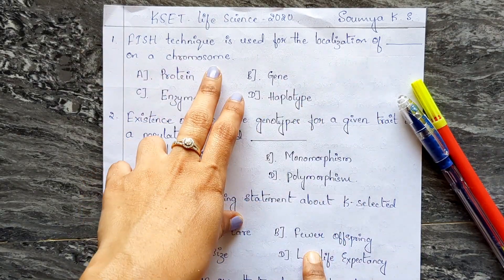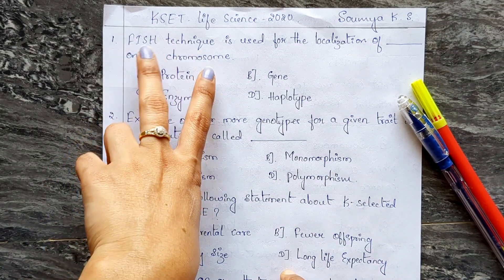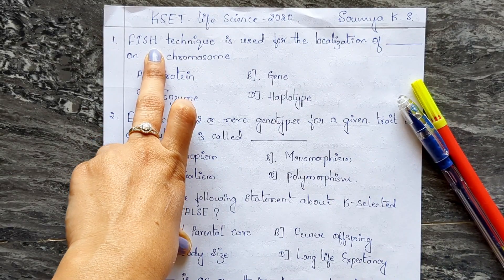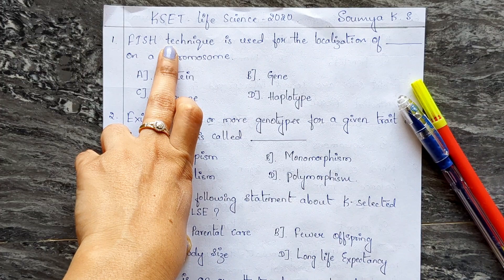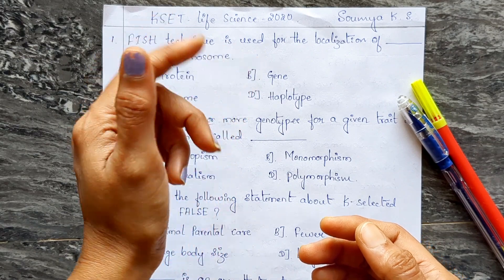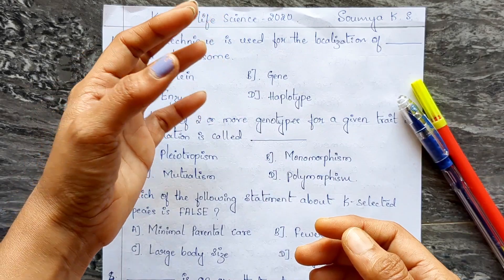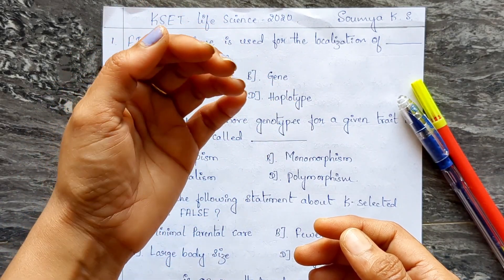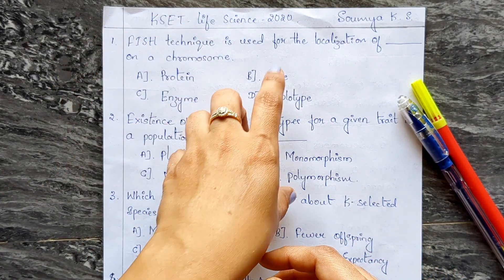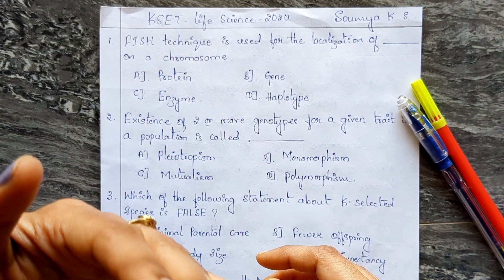The first question: the FISH technique is used for the localization of dash on a chromosome. FISH is covered in the biotechnology techniques chapter. The full form of FISH is Fluorescence In Situ Hybridization. This technique is used for locating a specific DNA sequence, identifying genetic diseases, and also to identify novel oncogenes — oncogenes are cancer-related genes.